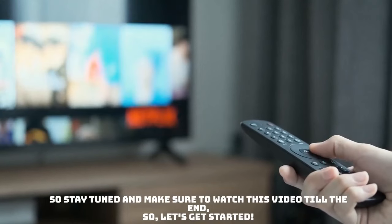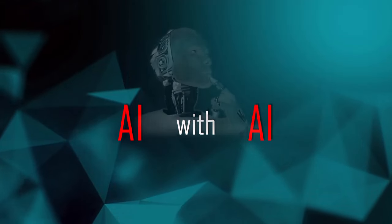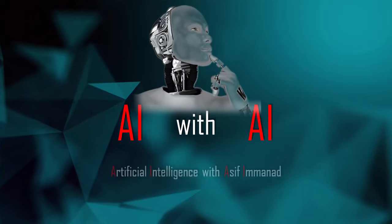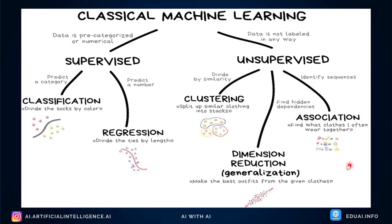Welcome to AI with AI — this is Asif. A quick recap on where we are: we're in the machine learning algorithms hierarchy, currently under unsupervised learning. We've already seen supervised learning, classification, regression techniques, and all their algorithms. Now we're talking about dimensionality reduction using PCA.